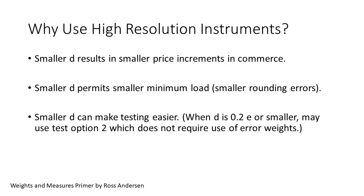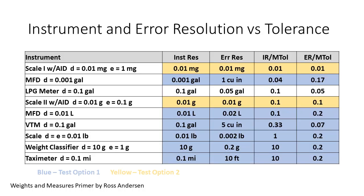I'm reusing a slide from part one. Remember that the blue shaded rows use test option one and the yellow shaded rows use test option two. I've changed the error resolution in the second and third rows from the bottom to be one-fifth of the tolerance. These are weight classifiers and normal resolution scales where E equals D. We can still use test option two when E equals D if the instrument has an extended displaying device. I've added a row with no shading for LP meters with temperature compensation. We will find that neither test option one nor test option two works for these instruments.